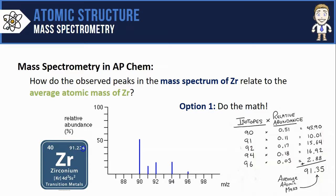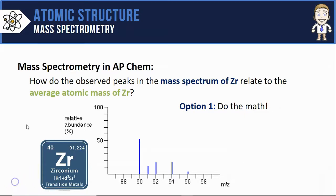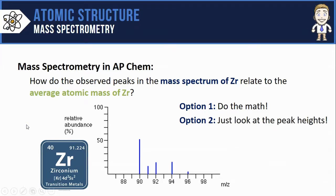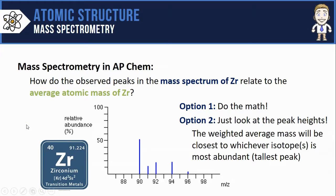This video is not going to go in detail on this calculation, but it is an option. A much faster way is to simply look at the peak heights. What I mean by that is the weighted average, so the average you see on the periodic table, it's always going to be closer to whichever isotopes are most abundant or whichever isotopes have the tallest peaks.